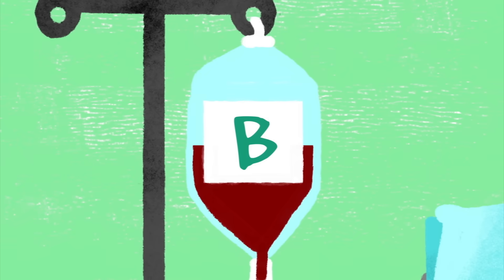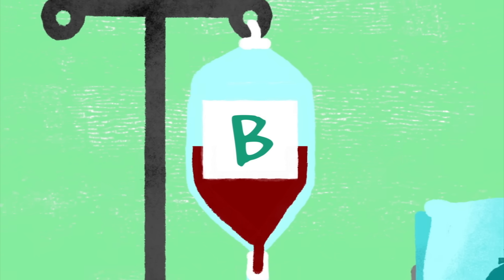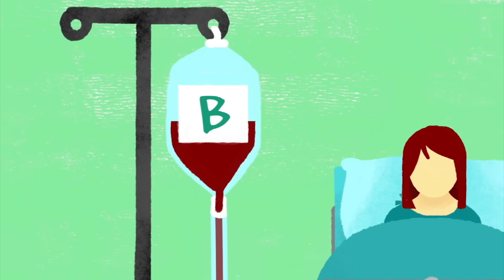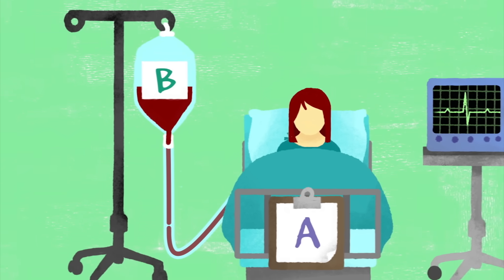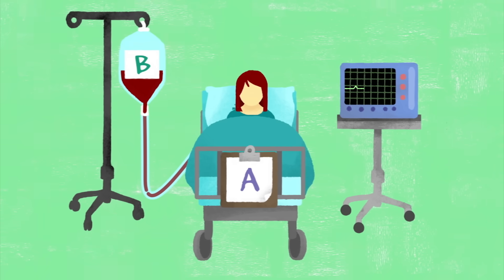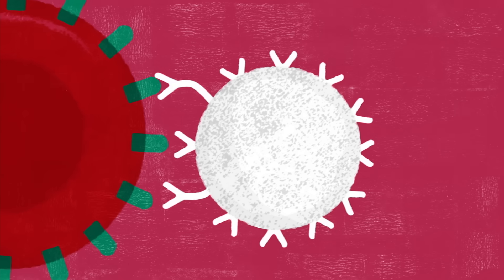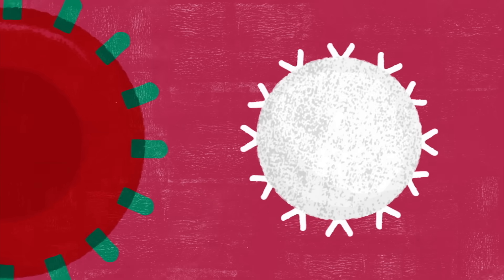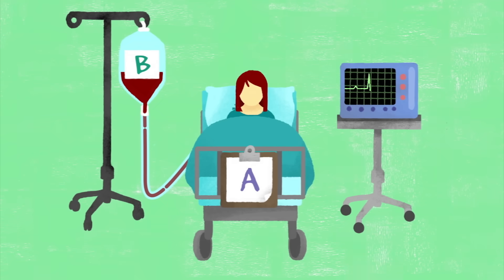Why do blood types matter? For blood transfusions, finding the correct one is a matter of life and death. If someone with type A blood is given type B blood, or vice versa, their antibodies will reject the foreign antigens and attack them, potentially causing the transfused blood to clot.